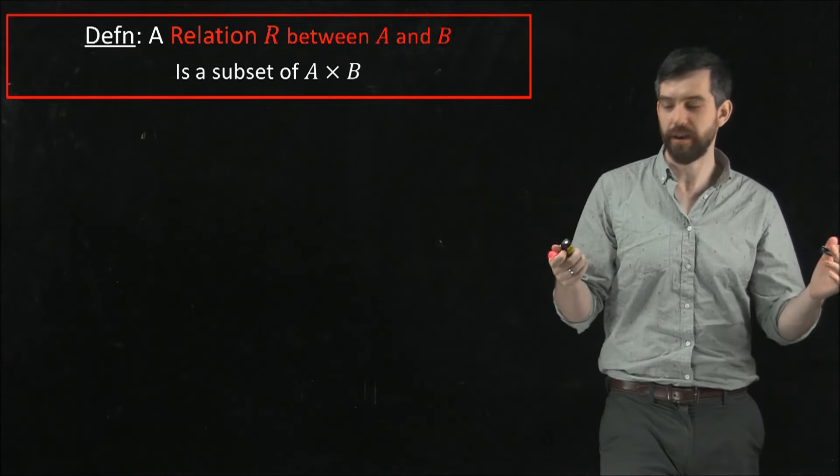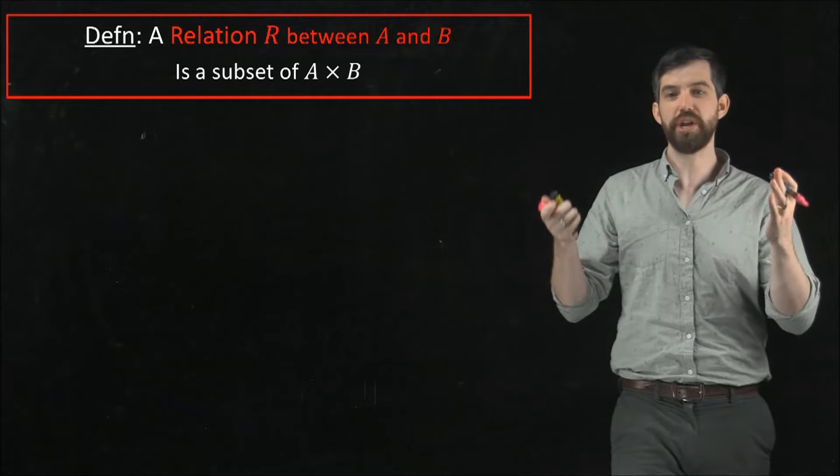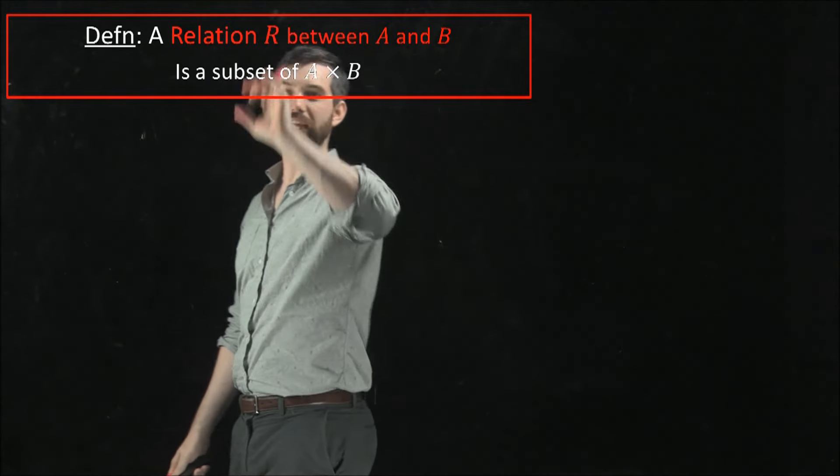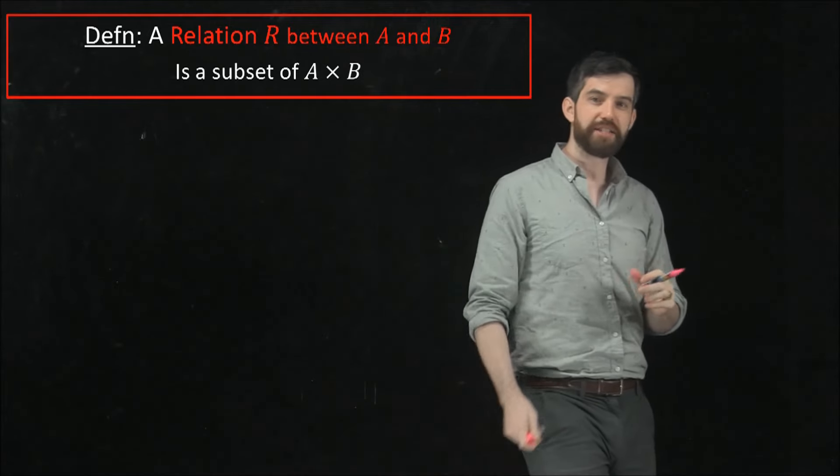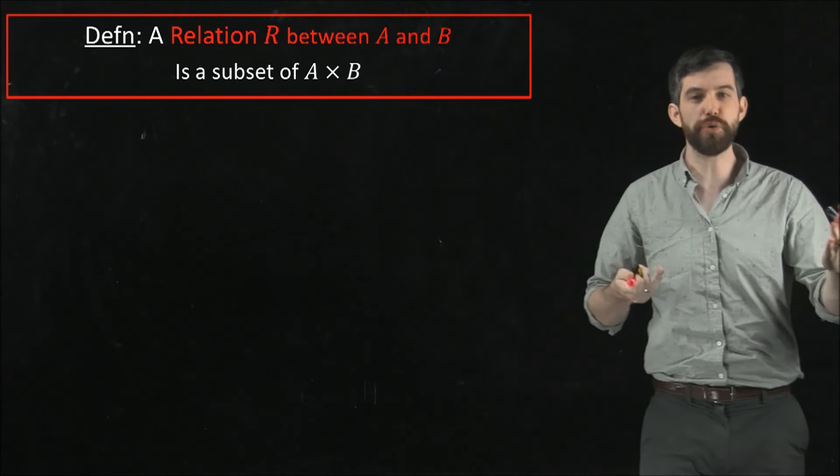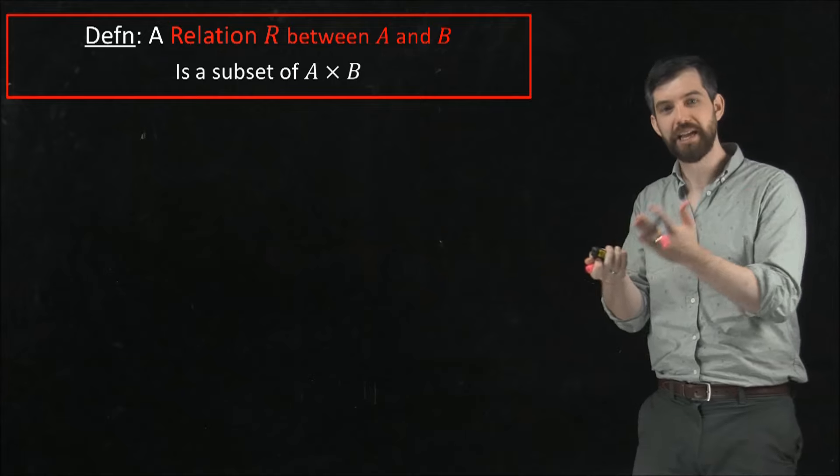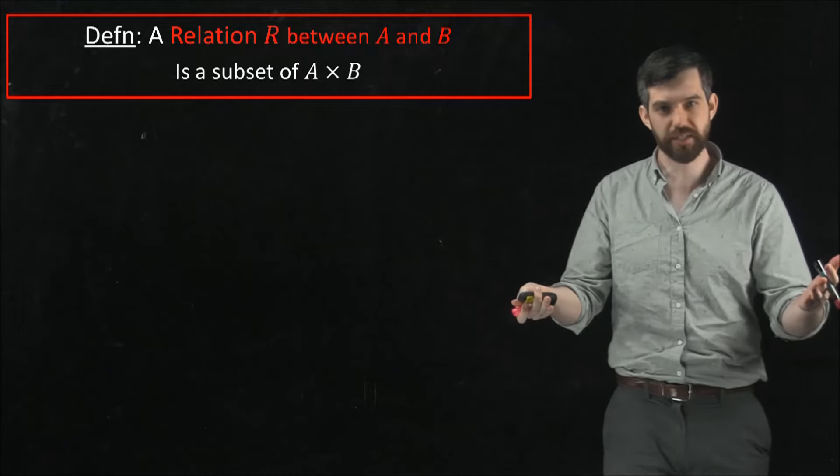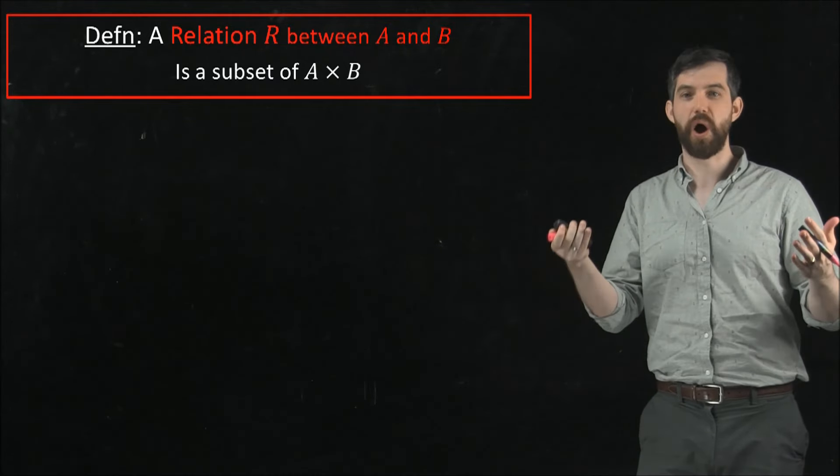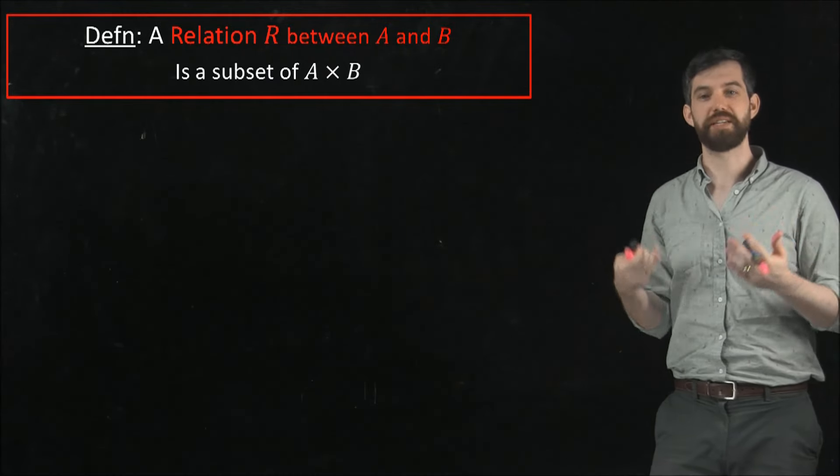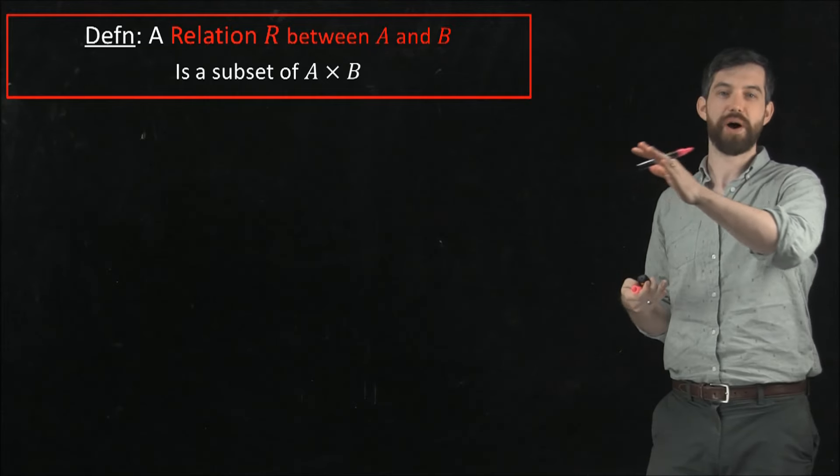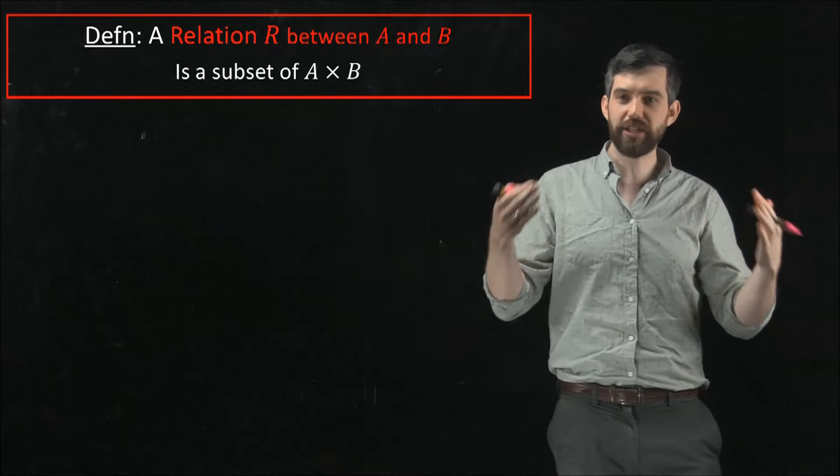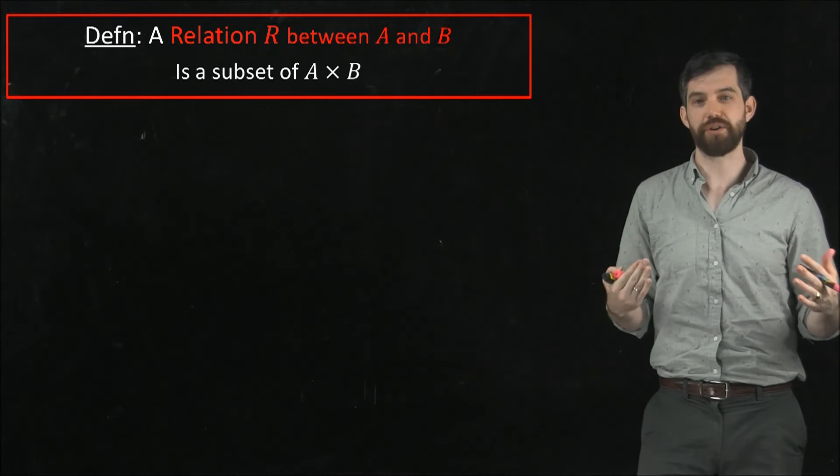So our formal definition is this: a relation, and I'm going to denote my relation by R, that's the name of it, it's the relation R. And it's a relationship between two different sets, so between A and B. We've been thinking of it as all of these different ordered pairs, but ordered pairs are elements of the Cartesian product, this A cross B. So when I say that a relation is a subset of A cross B...